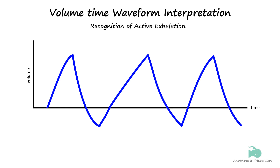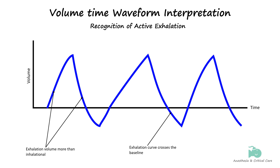Active exhalation in mechanical ventilation occurs when a patient uses their respiratory muscles to forcefully expel air, rather than relying on the passive recoil of the lungs — for example, with air trapping, patient discomfort, or asynchrony. The exhalation volume may exceed the inhalation volume as the patient expels more air than the ventilator delivered. The curve might also display a steeper or more abrupt slope during exhalation and can drop below the baseline, indicating a negative volume shift. Furthermore, the volume-time waveform can be used to detect patient-ventilator asynchrony in conjunction with flow and pressure-time waveforms, which will be discussed in a separate video.